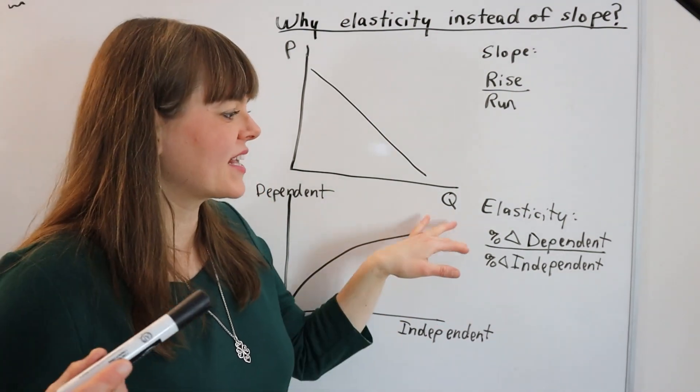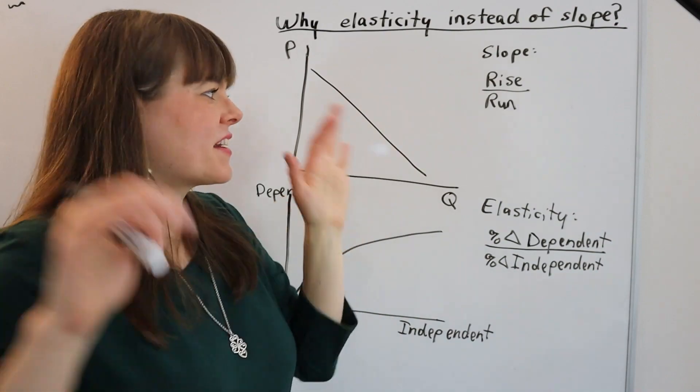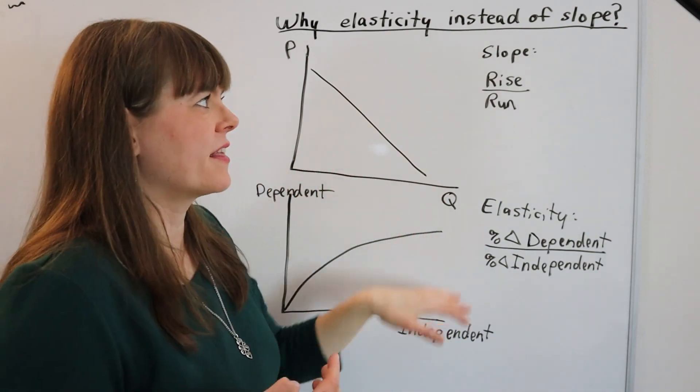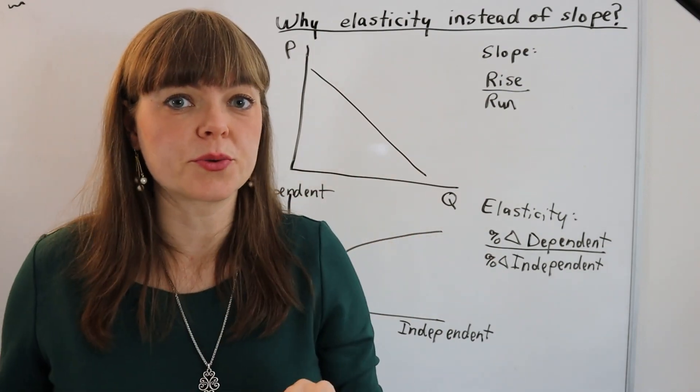Why do economists use elasticity instead of slope? And the number one reason here is going to be the fact that slope depends on the units that you choose.